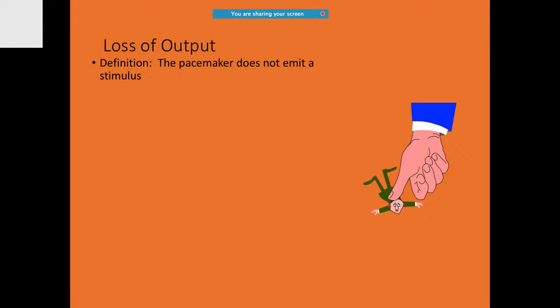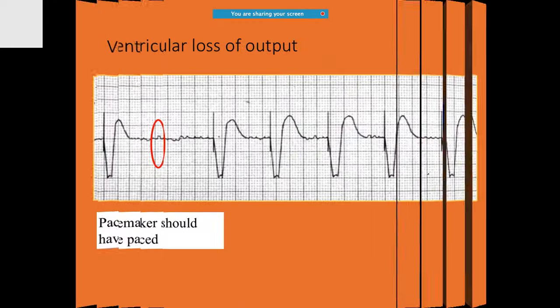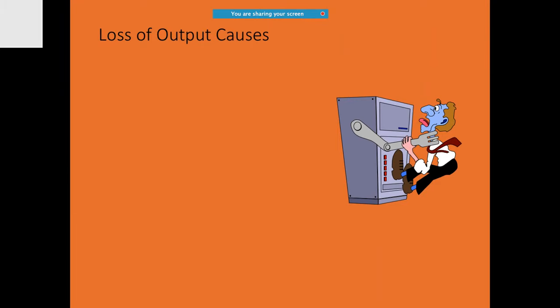Loss of output is when the pacemaker does not emit any output at all. You can see in other beats there is a clear unipolar pacing spike causing good ventricular capture, but in between — in the area marked with a red circle — there should have been a pacing stimulus but no pacing spike is seen. Causes include: a loose screw, lead fracture, pacemaker inhibition, concealed stimulus on the ECG, or battery depletion.